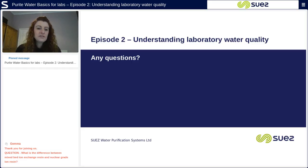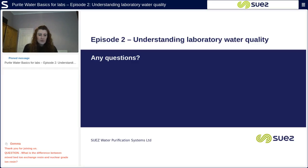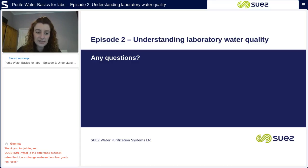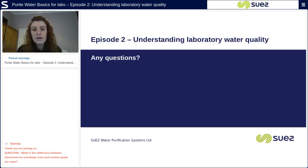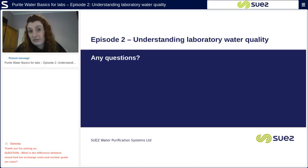The first question: what is the difference between mixed bed ion exchange resin and nuclear grade ion exchange resin? Ion exchange resin becomes depleted after a certain amount of time and then has to be regenerated using acids and alkalis, after which it can be reused. Resin that is brand new and hasn't been regenerated is what we call nuclear grade resin — it removes minerals at a better rate than a mixed bed ion exchange resin which has been regenerated.